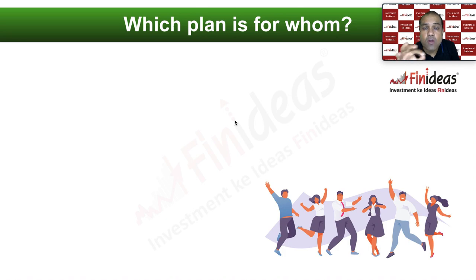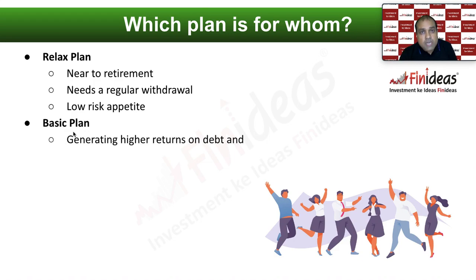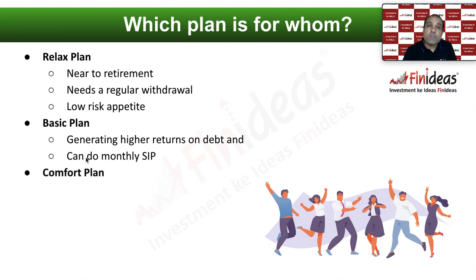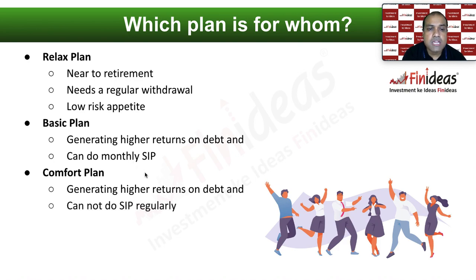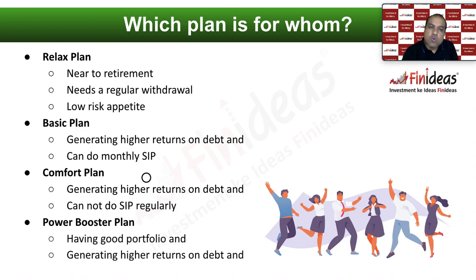Now the question: which plan is good for me? Relax Plan is good for people who are near to retirement, or who want regular withdrawal, or whose risk profile is very low. Basic Plan is good for people who can generate more interest income somewhere else and who have the discipline of monthly SIP. The Comfort Plan is the extension of Basic Plan — for the same people who can generate more interest income somewhere else but don't want to keep monthly SIP discipline. If you don't want monthly SIP discipline, choose the Comfort Plan — the 50% plan. And the Power Booster Plan is good for people who are having a portfolio with them, who can generate more interest income somewhere else, and who can handle the monthly SIP discipline.